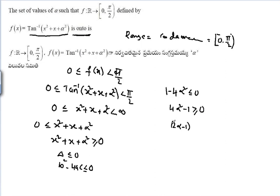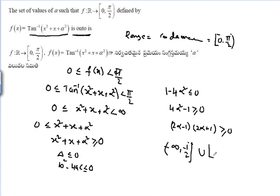This gives 4α² - 1 ≥ 0, which factors as (2α - 1)(2α + 1) ≥ 0. The critical points are α = -1/2 and α = 1/2. Therefore, the set of values of alpha is (-∞, -1/2] ∪ [1/2, +∞).